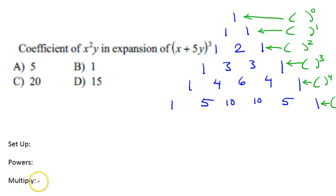Set up, powers, and multiply. So as I set up, 1, 3, 3, 1 are the coefficients, so I'm just going to write that down, spaced out. 1, 3, 3, 1. They always start off positive.